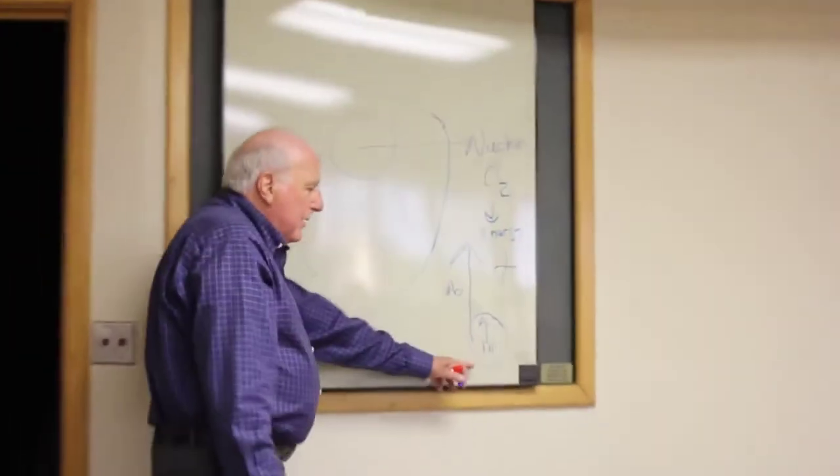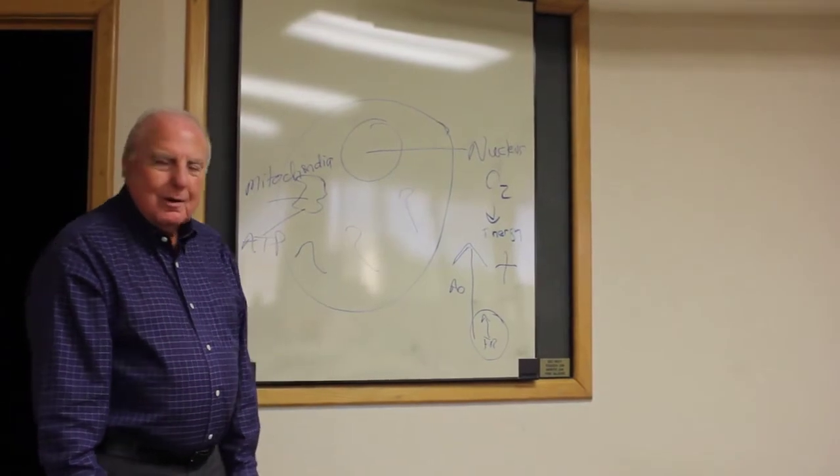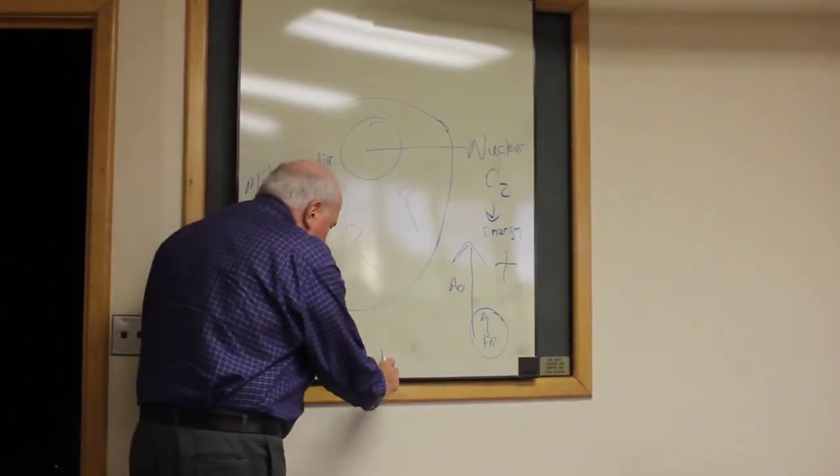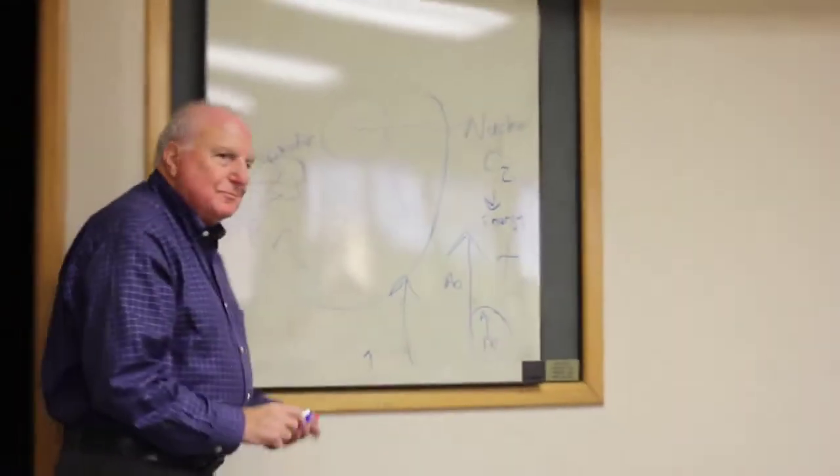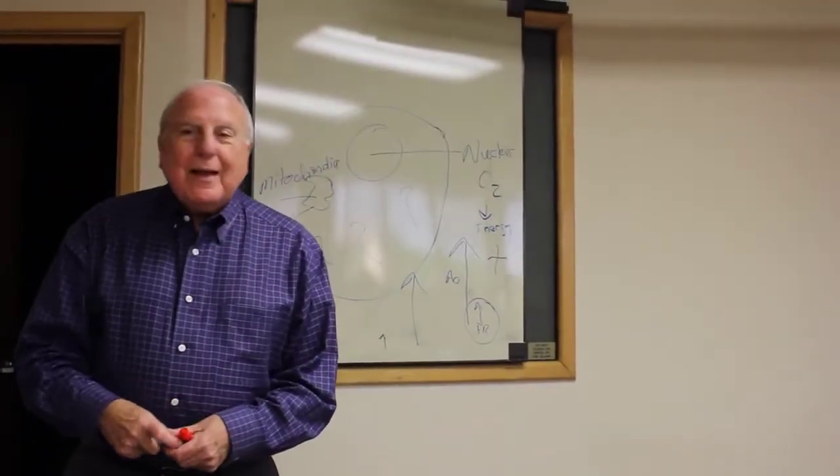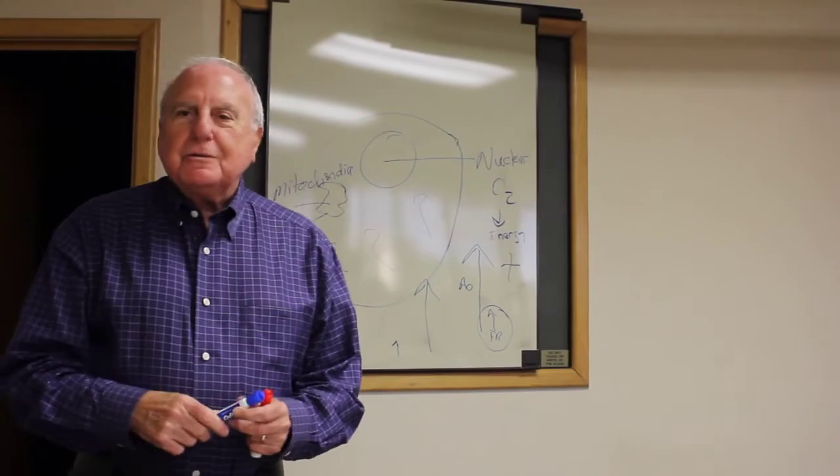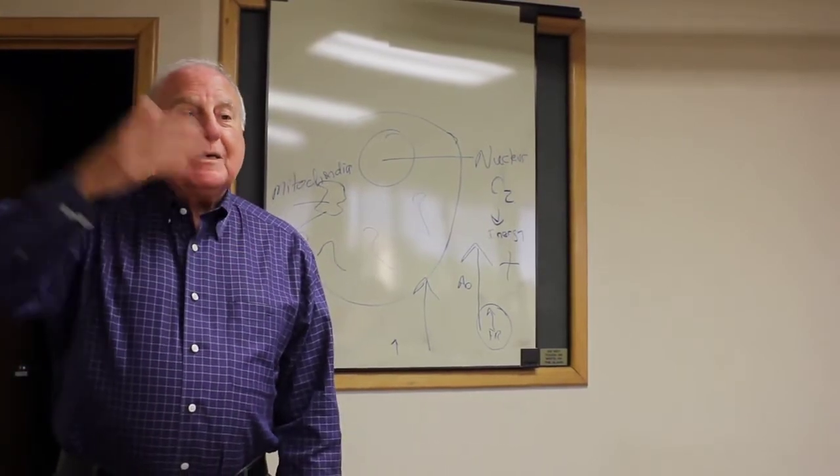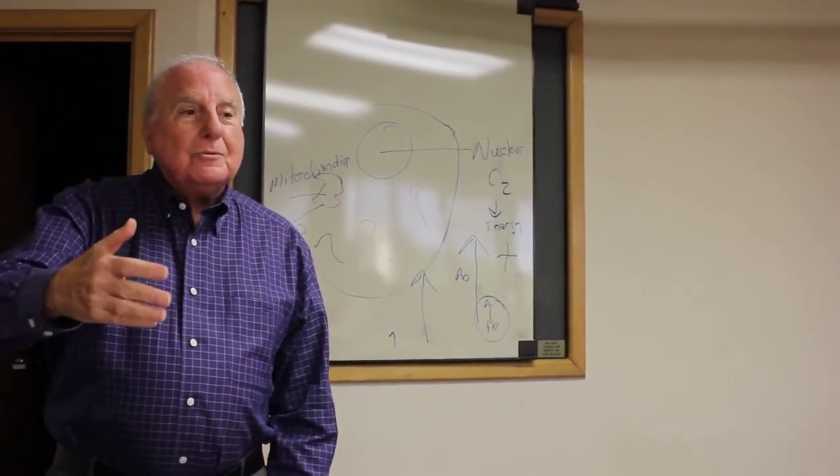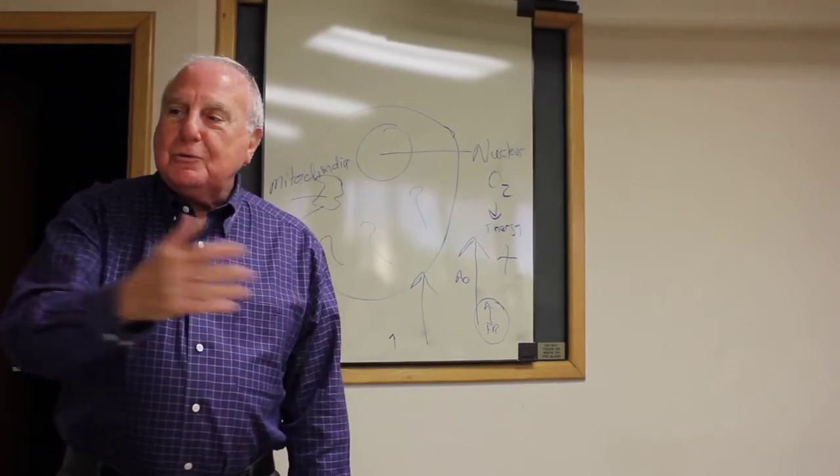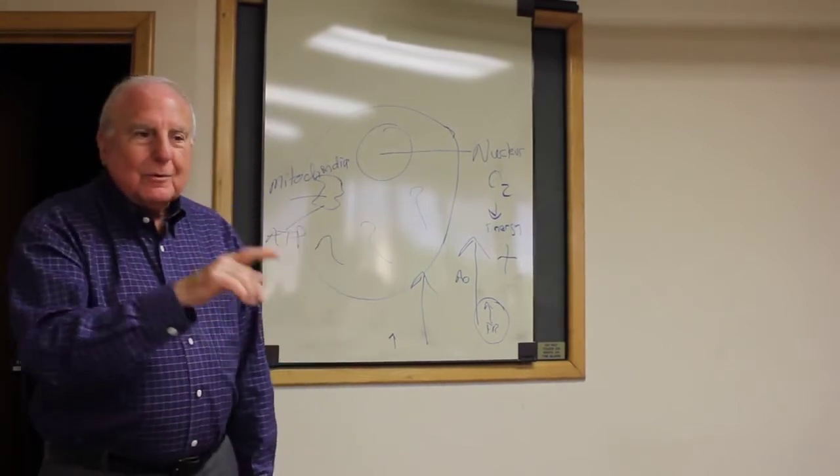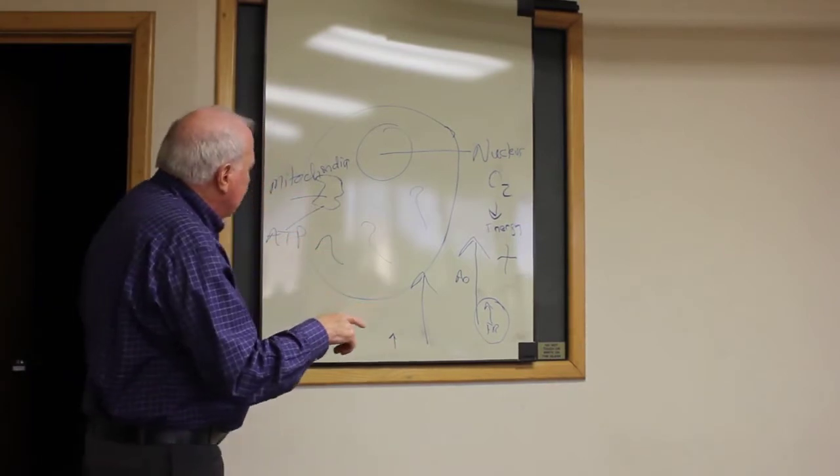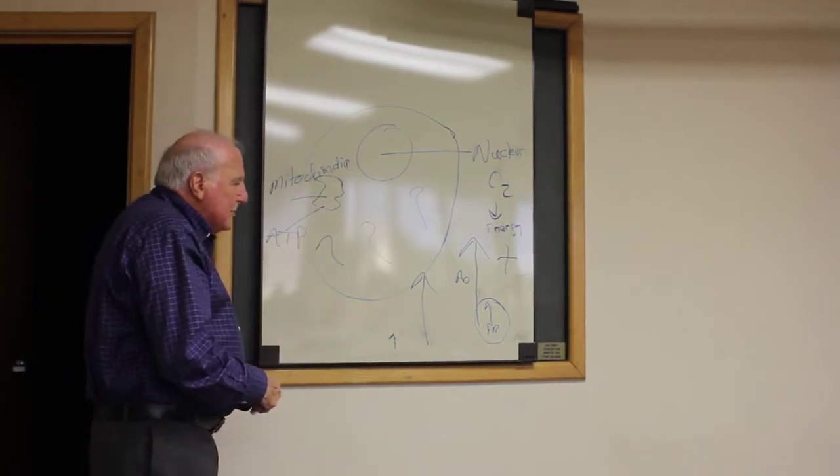So we end up when we're 30, 35 or so with this many antioxidants and this many free radicals. That's called oxidative stress. The excess production of free radicals over your ability to neutralize them with antioxidants. So now I've covered the words that are used in some of the videos you've seen. But how does that all happen?